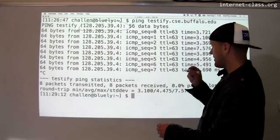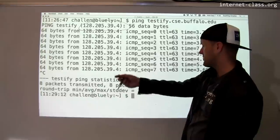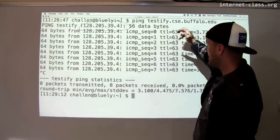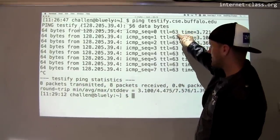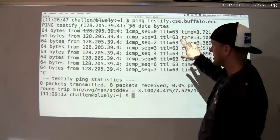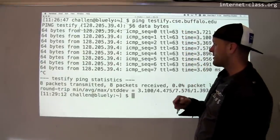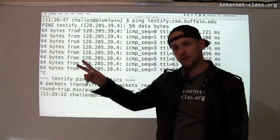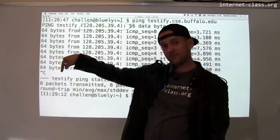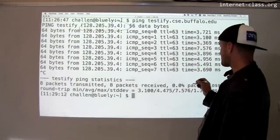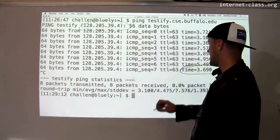This is the time to live for the packet. So IP packets, every time they go through a particular hop, the time to live is decremented. The value probably started at 64. So the fact that it's 63 indicates that there's probably a very short connection between my computer and Testify. And hopefully there is, because Testify is in the next room.